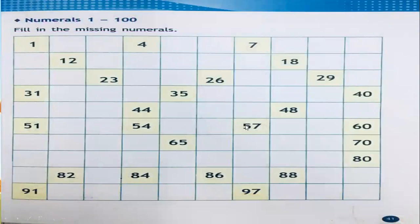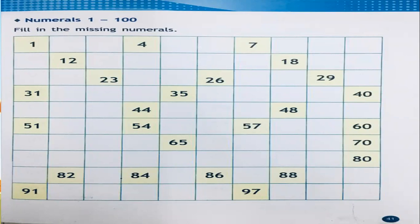Now all of you take your math reader and open page number 41. Here you can see the numbers from 1 to 100 and you have to fill in the missing numbers. Number 1 is here — after 1 comes 2, write 2 in the second box. After 2 comes 3, write 3 in the third box. Number 4 is already there, so after 4 comes 5 — write number 5. Like this, fill in all the missing numbers in the boxes. By this you can learn missing numbers.